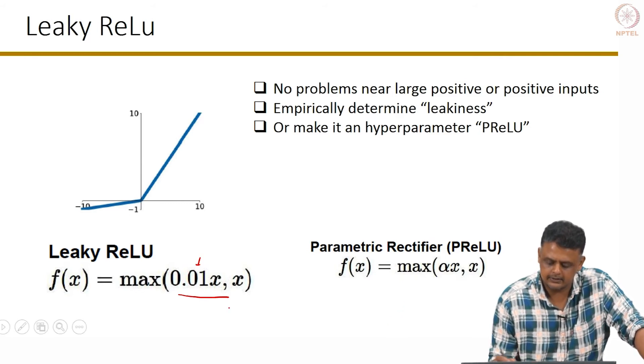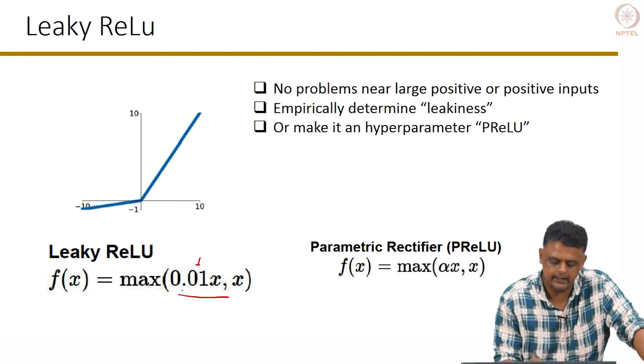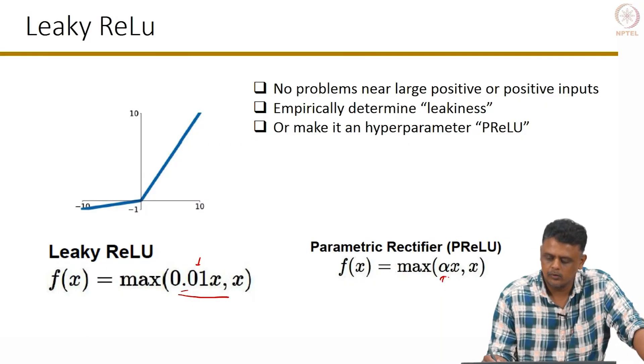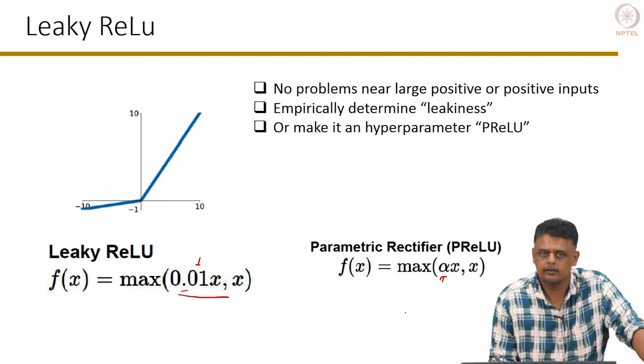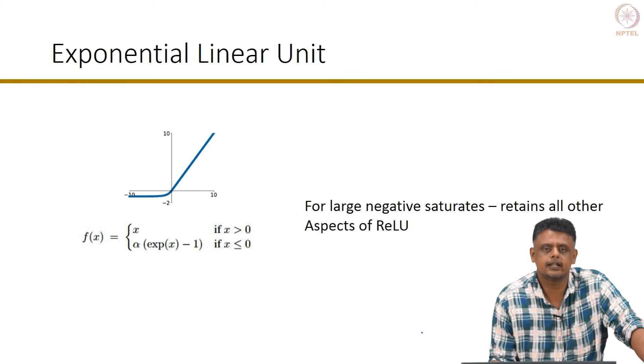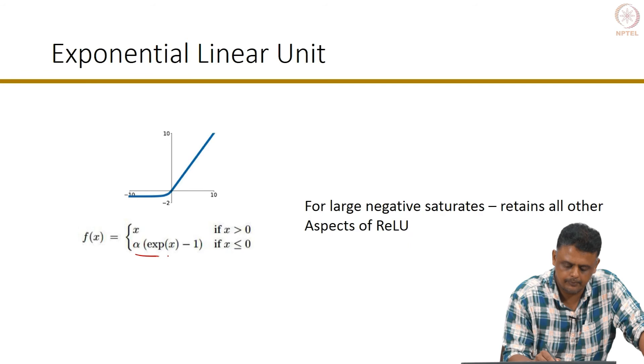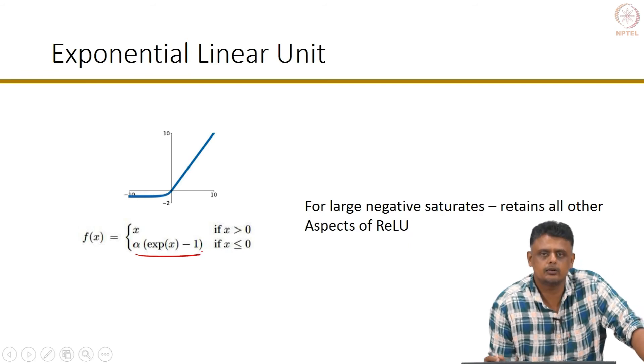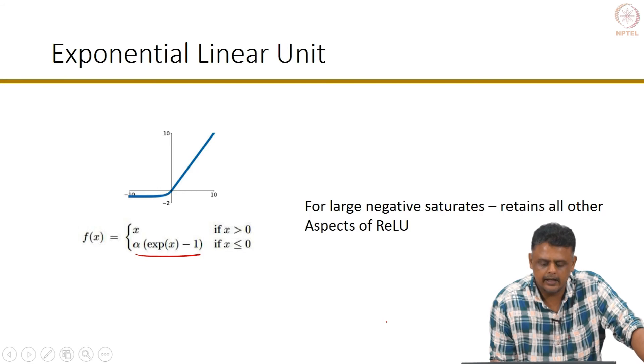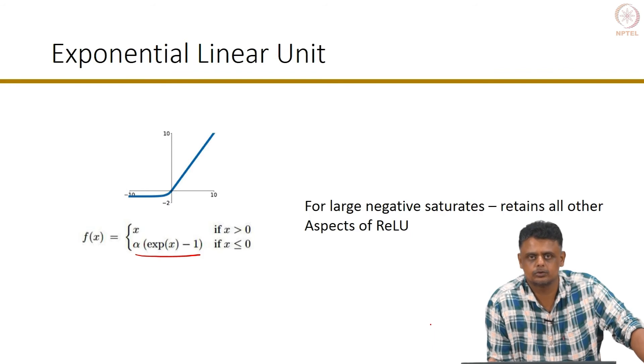Another version of this is the parametric rectified linear unit, wherein instead of having a fixed scaling factor for negative values of x, we have an alpha which is a parameter learned during the back propagation process. Yet another variation is the exponential linear unit, which for negative values of x takes this form. This is to make sure that the average activation in a layer goes to 0, and this also has a gradient for negative values of x.